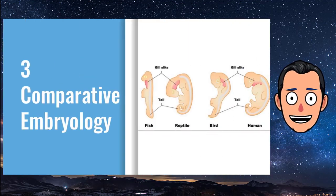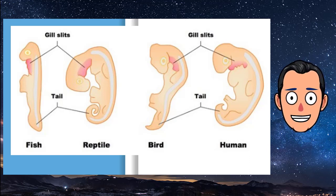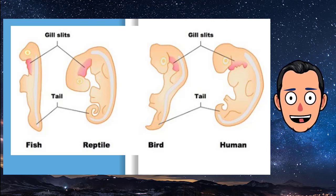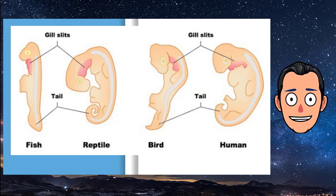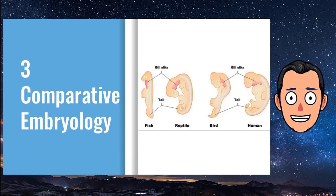Comparative embryology is the study of the similarities and differences in the embryos of different species. Similarities in embryos are evidence of common ancestry. All vertebrate embryos, for example, have gill slits and tails. All of the animals shown, except for fish, lose their gill slits by adulthood. Some of them also lose their tails. In humans, the tail is reduced to the tailbone.